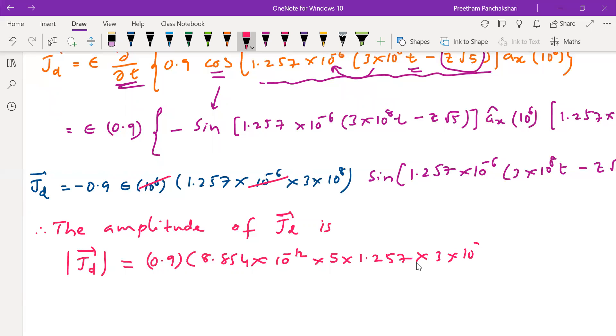Into here what happens: 10⁻⁶ and 10⁶ cancelled, left with 1.257×3×10⁸. So we have to multiply this complete thing using calculator, so we get an answer of 0.01502 ampere per meter square. So that is the amplitude of the displacement current density required for this particular problem.